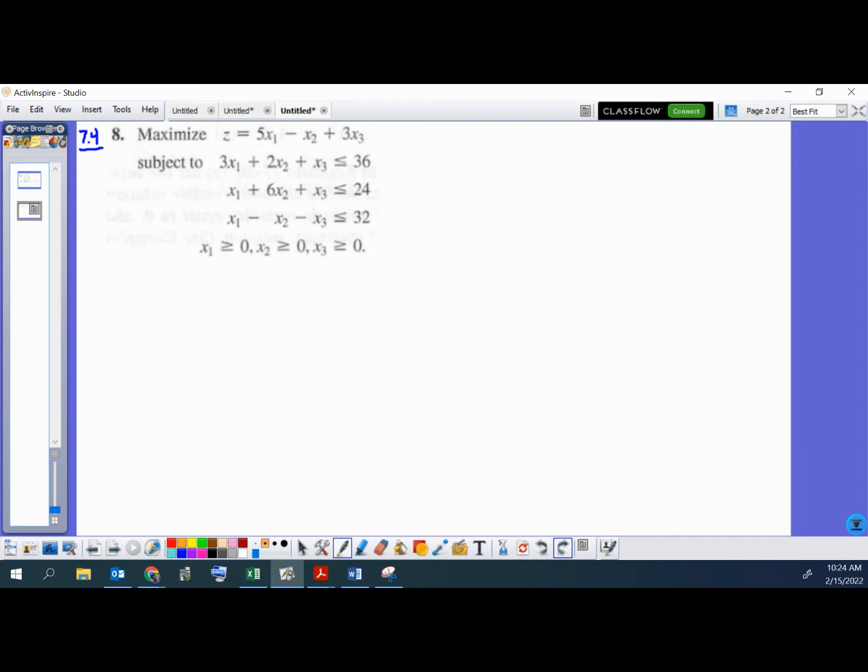So this first part here, we're going to be looking at setting up the simplex tableau, the initial simplex tableau. And like any other linear programming problem, we have a function here we're trying to maximize. Z equals 5x1 minus x2 plus 3x3. So there's three variables there.